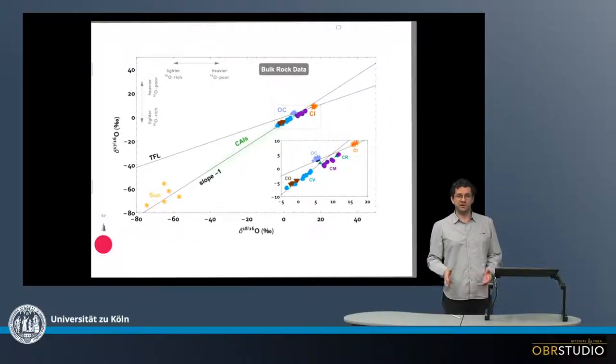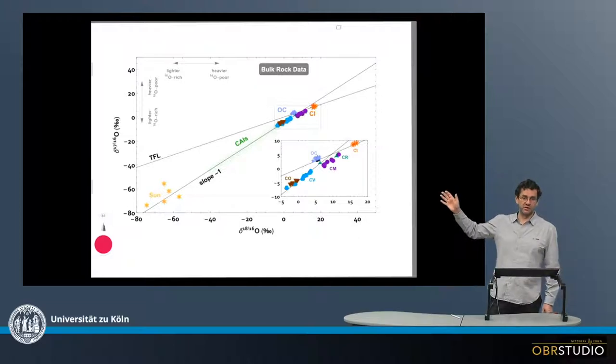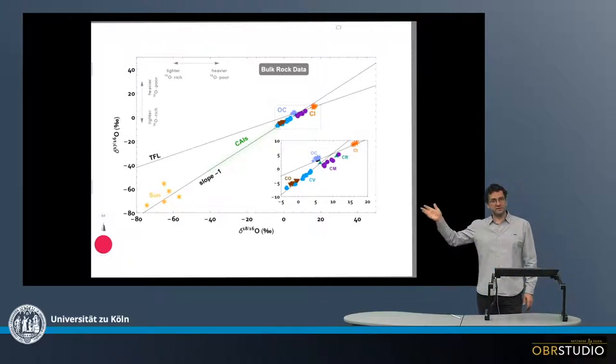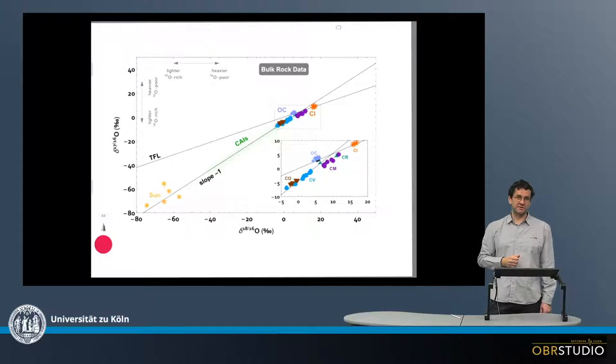The oxygen isotope composition varies among the various meteorites, and this is what is shown here on this three oxygen isotope plot. Three isotope plot because there are three isotopes that are shown. On the x-axis there's the delta-18-16-O and on the y-axis there's the delta-17-16-O.